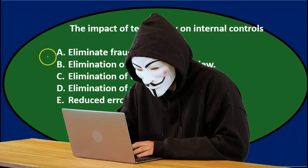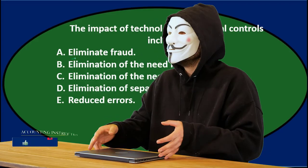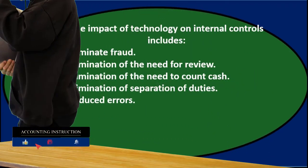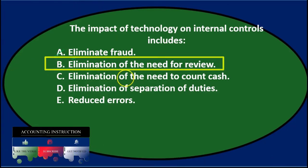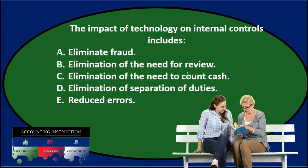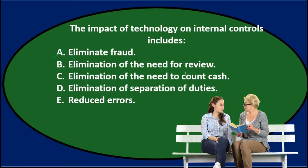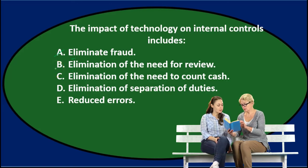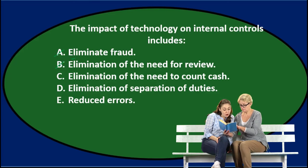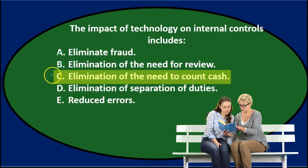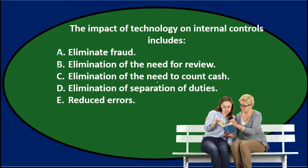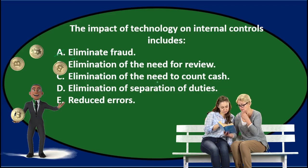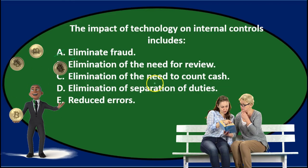A, eliminate fraud — technology could reduce the likelihood of fraud, but the word 'eliminate' takes it out. B, eliminate the need for review — it might reduce procedures but doesn't eliminate the need. C, elimination of the need to count cash — even with a technology system recording cash in and out, we still need to count cash as part of control procedures.